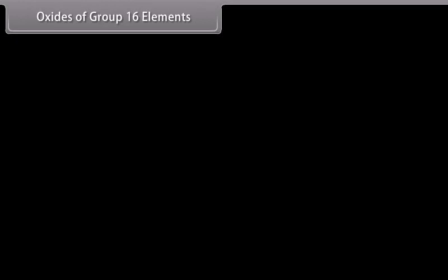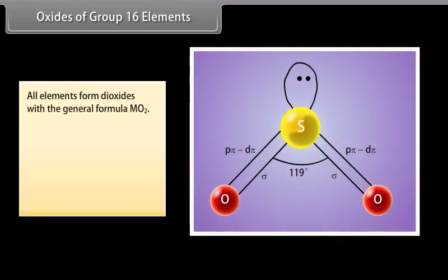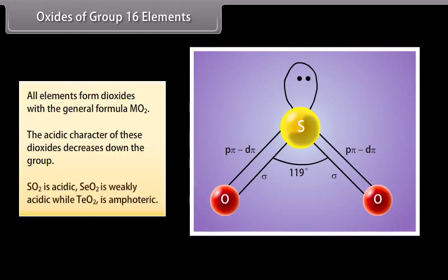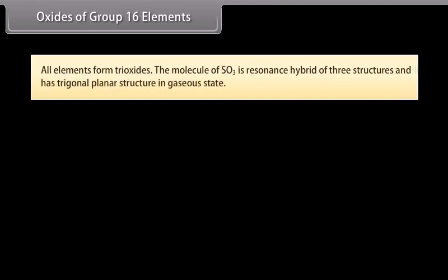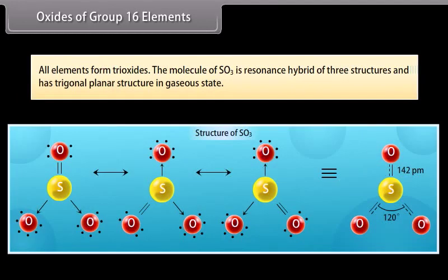Oxides of group 16 elements. All elements form a variety of oxides. All elements form dioxides with a general formula MO2. The acidic character of these dioxides decreases down the group. SO2 is acidic, SeO2 is weakly acidic, while TeO2 is amphoteric. All elements form trioxides. The molecule of SO3 is a resonance hybrid of these structures and has trigonal planar structure in gaseous state.